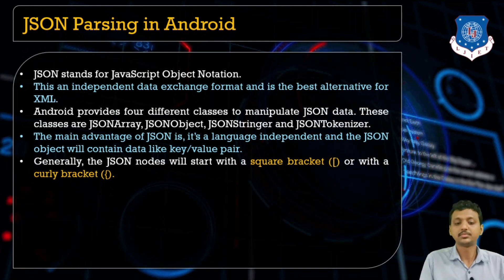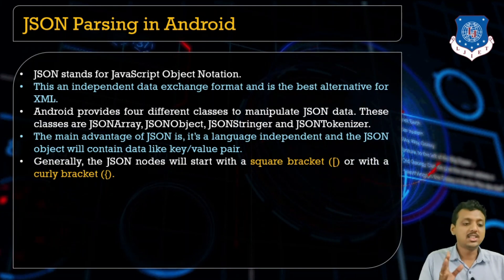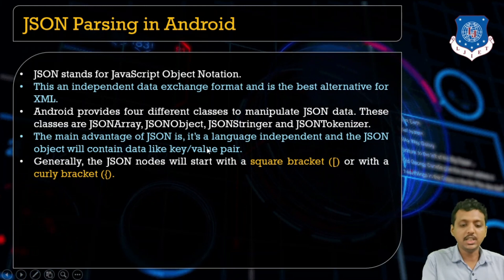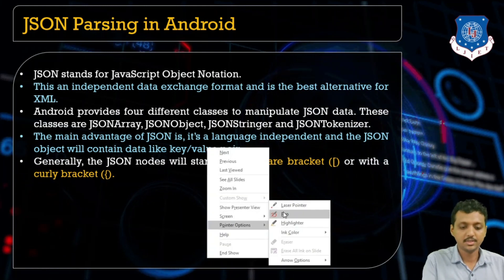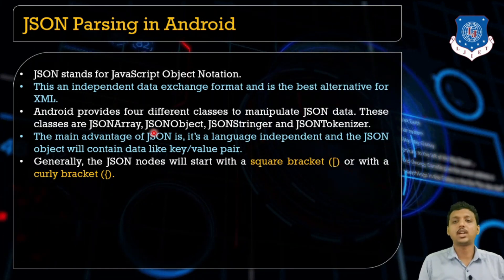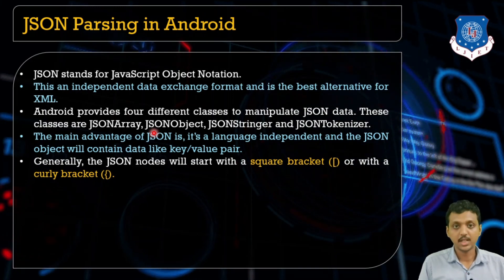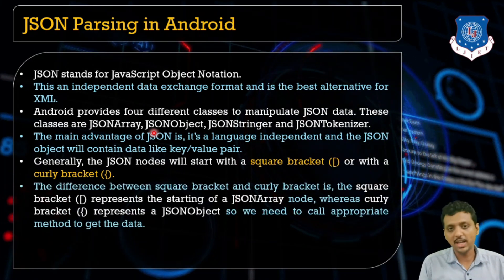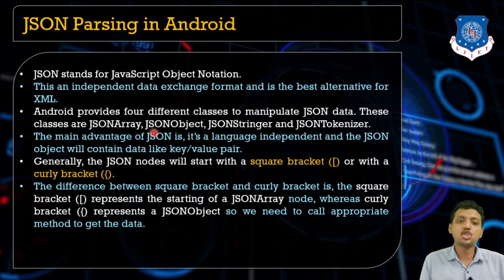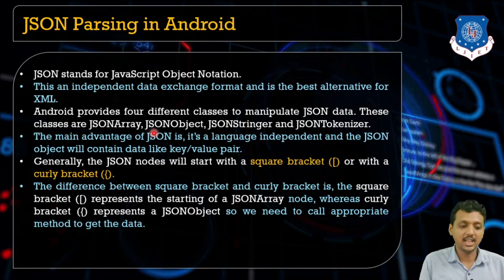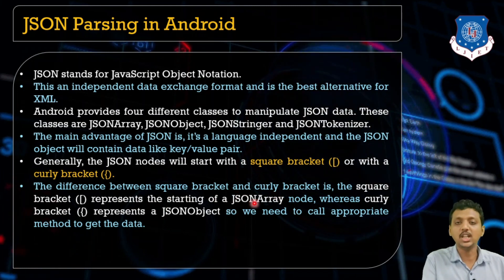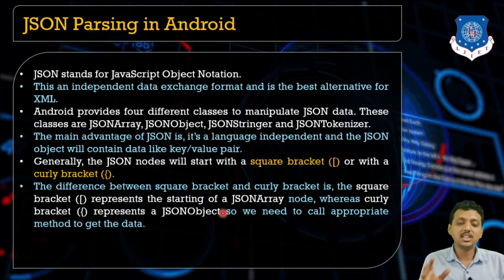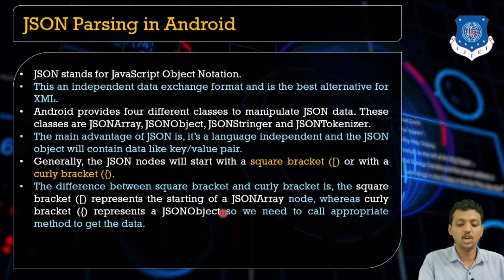The main advantage of JSON is that it is language independent. A JSON object contains data in the form of key-value pairs. JSON data starts with either square brackets or curly brackets. The curly bracket represents a JSON object, and the square bracket represents a JSON array. So the square bracket marks the start of a JSON array node, and the curly bracket marks the start of a JSON object.